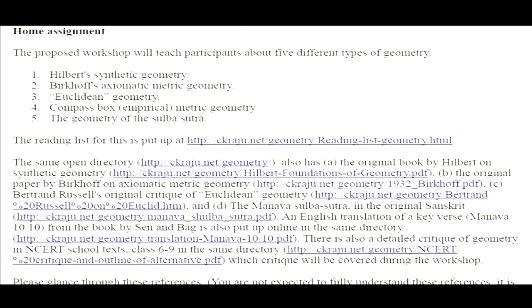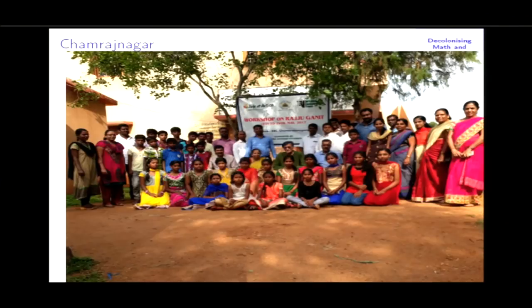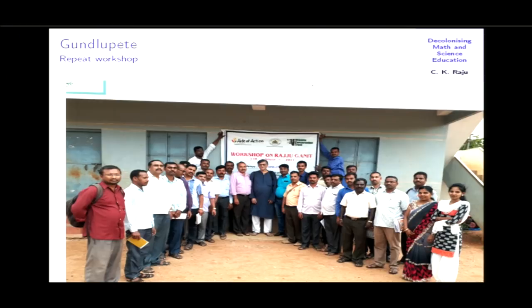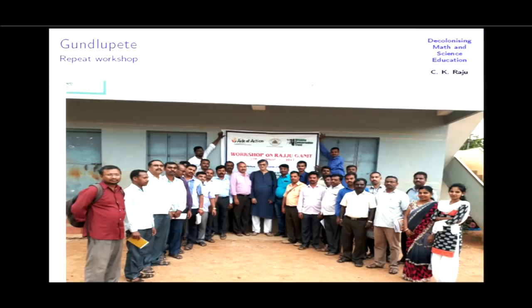Current teaching conflates several types of geometries: Hilbert synthetic geometry and formal geometry with empirical metric compass-box geometry — they're all different. The compass box is inferior because it has no instrument to measure a curved line. Teaching cord geometry leads to conceptual clarity about point, angle, arc, and so on. Teachers accepted this during workshops — the home assignment made them realize there are five types of geometry being mixed together: Hilbert synthetic geometry, Birkhoff's metric geometry, so-called Euclidean geometry, compass-box geometry, and the geometry of the Shulva Sutra or cord geometry. This is being tried out with 40 schools in Nasik, Maharashtra, and a textbook has been written for it.